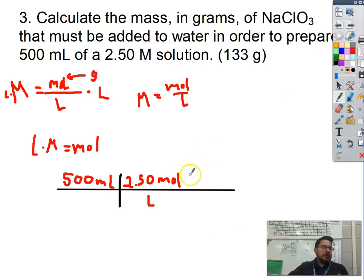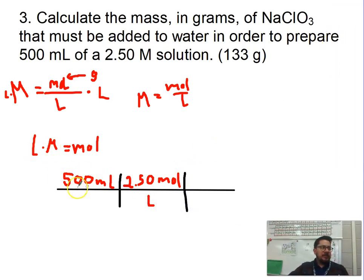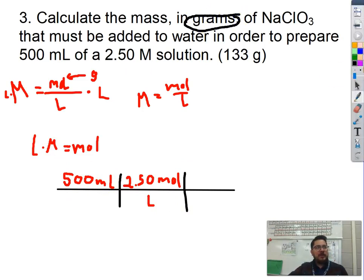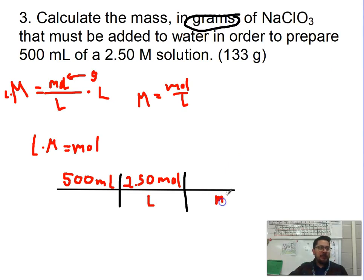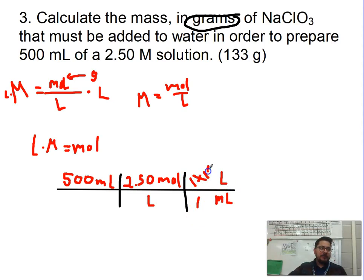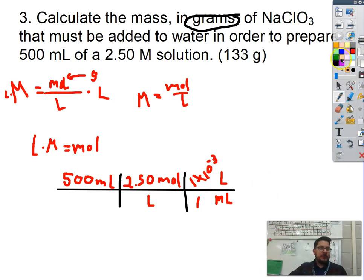So far I have liters times molarity (L × M). Next I need to cancel milliliters and liters because I'm looking for grams. I'll put milliliters on the bottom so it cancels out, and liters on top so that cancels too. This is a prefix conversion step: 1 liter equals 1 times 10 to the negative third milliliters. That looks good so far.